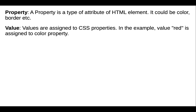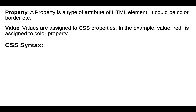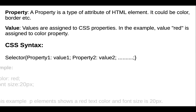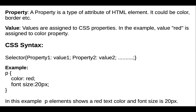In this example, the value red is assigned to the color property. For CSS syntax, we first use a selector, then in the braces we use a property and its value. For example, p is a selector, color is a property, and red is a value. We can add multiple properties — in this example the p element shows a red color and font-size of 20px.